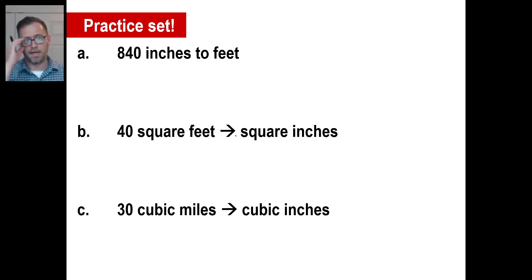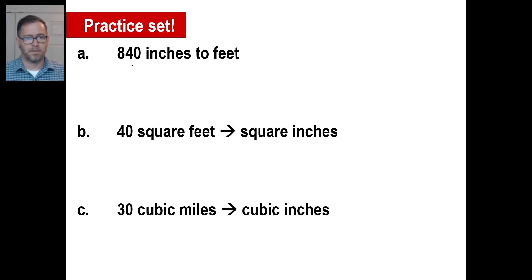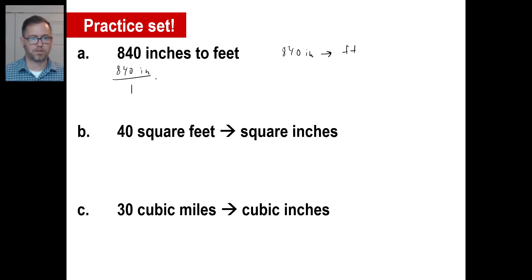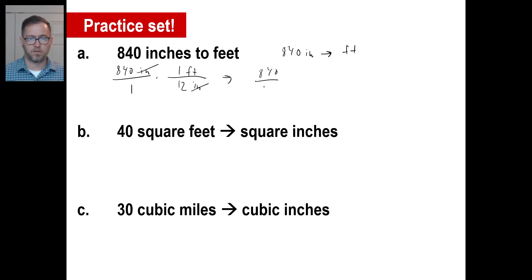Give these three a shot. Let's try A first — use the method. 840 inches to feet. Write what you're given: 840 inches. You need another fraction with an inch at the bottom. 12 inches is one foot. Inches go away. You have 840 on top, 12 on the bottom — that divides to give you 70. Your remaining unit is feet: 70 feet.